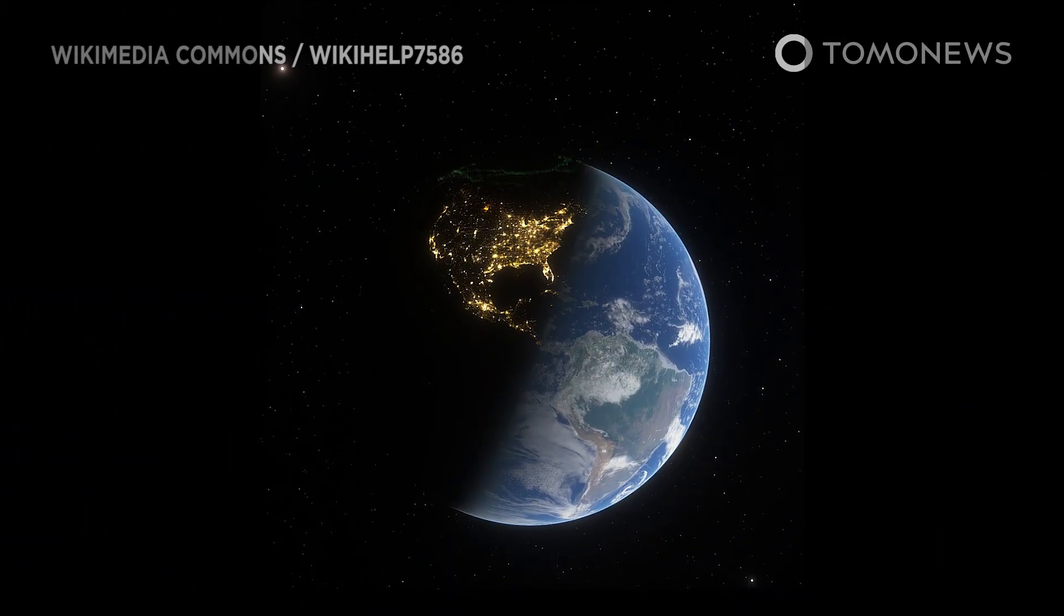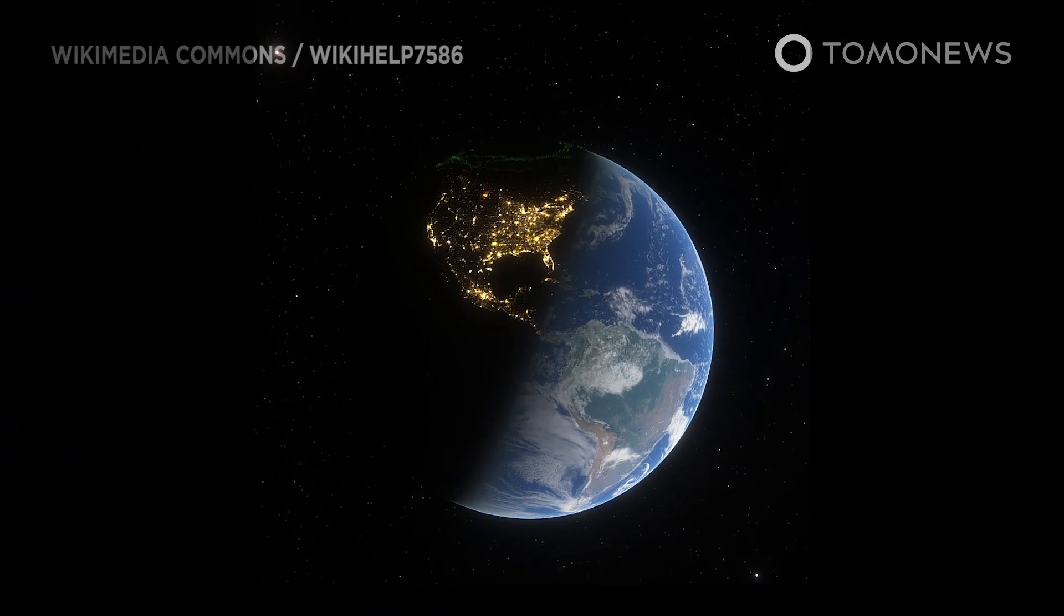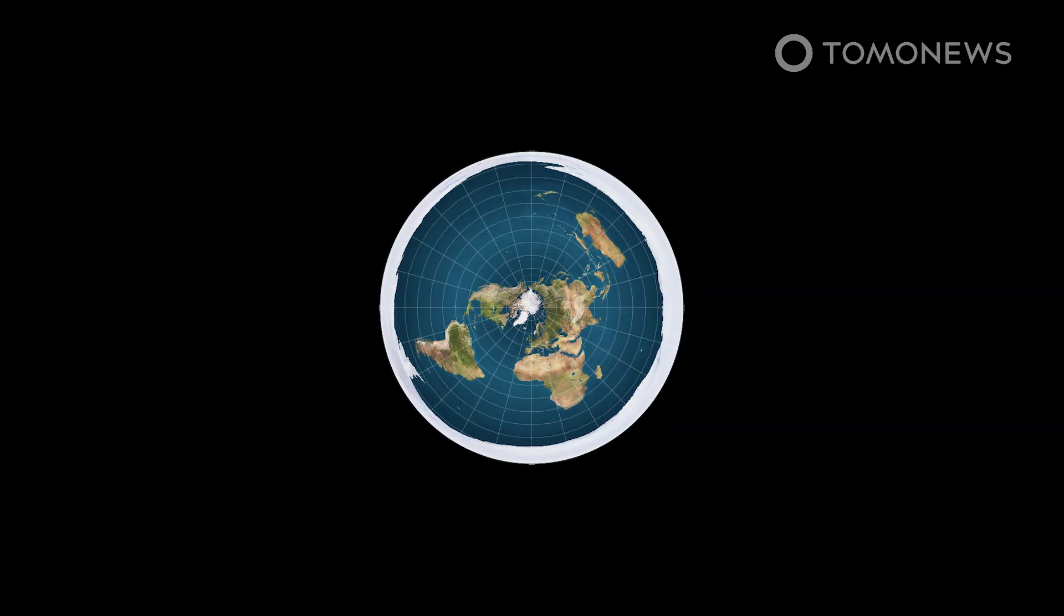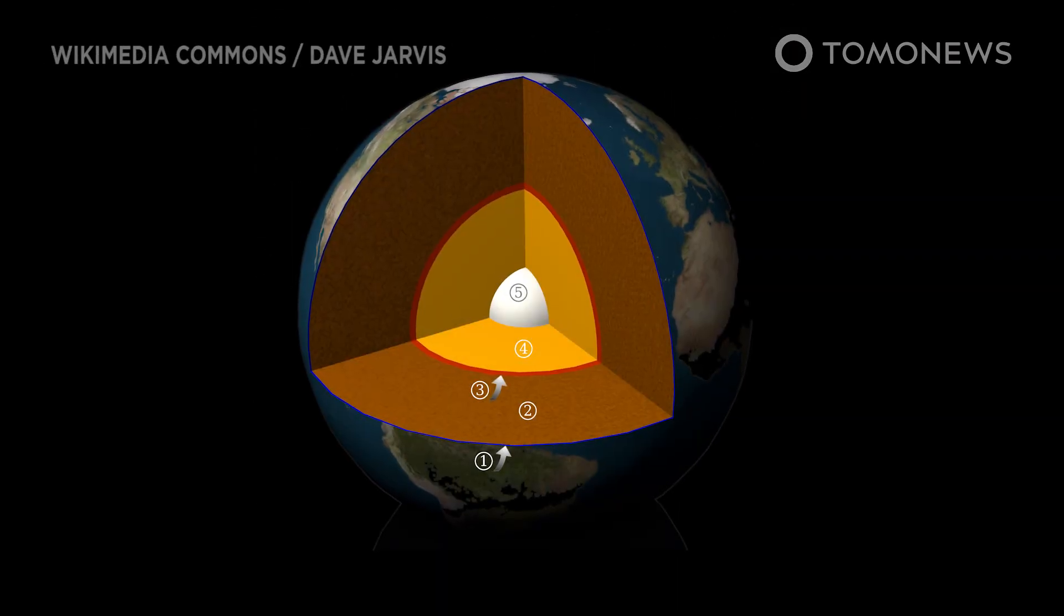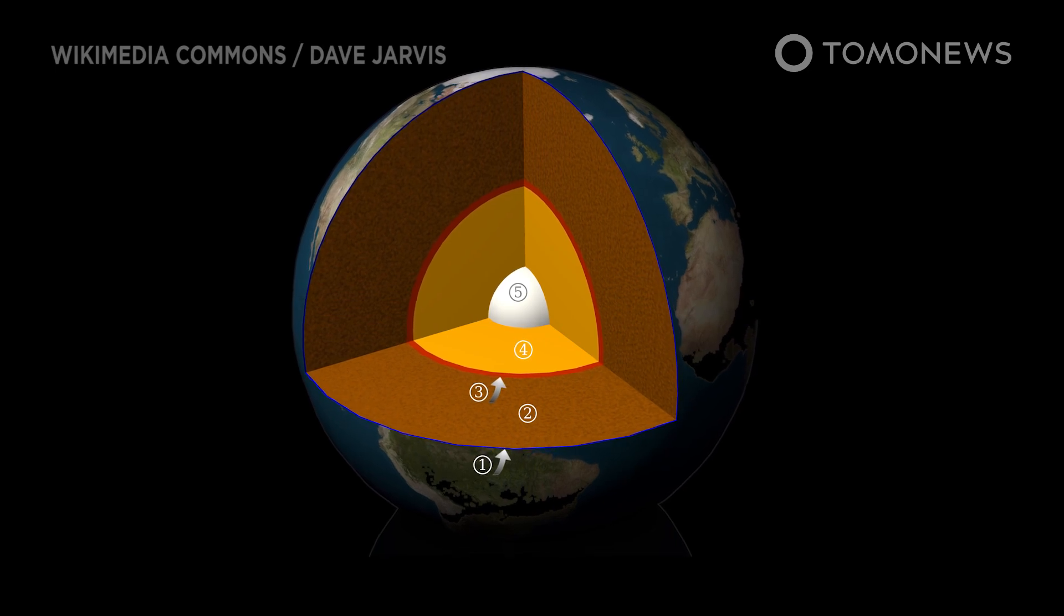For two decades, scientists have suspected that our understanding of the basic structure of the Earth was incomplete. And we don't mean the Earth is flat. Now, scientists in Australia may have solved the problem. Here's what they found.